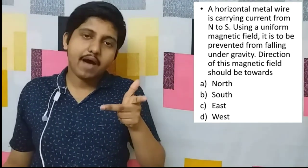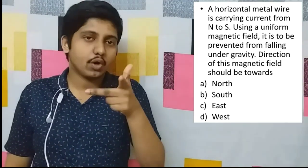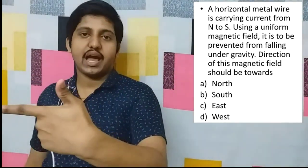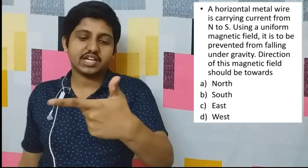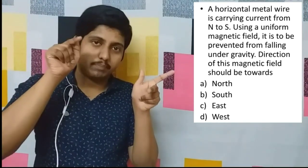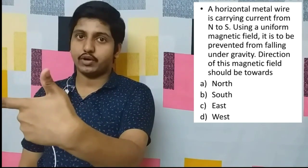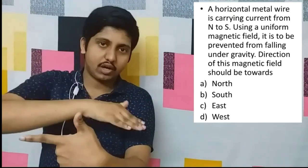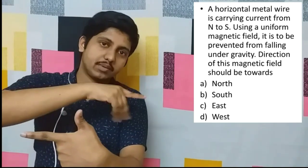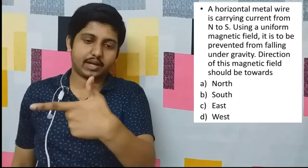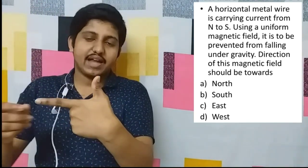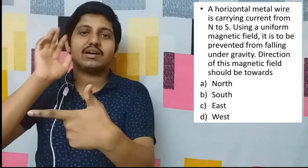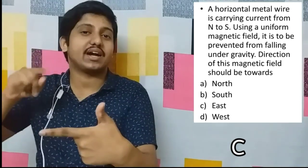The question is: a horizontal metal wire carrying an electric current from north to south is to be prevented from falling under gravity using a uniform magnetic field. What direction should the magnetic field be? We use Fleming's left-hand rule. Current is from north to south so the middle finger points accordingly. The force must act upward to prevent falling, so the thumb points upward. The index finger — magnetic field — points towards east. So the answer is east.